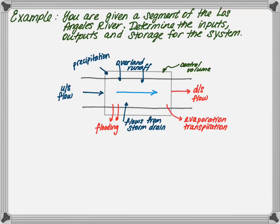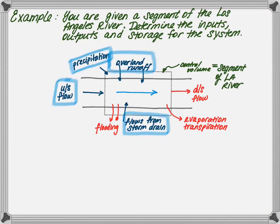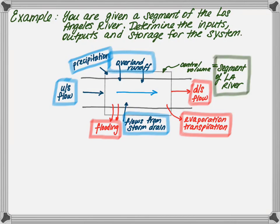Outputs include downstream flow leaving the system, flooding when the water levels are too high to be contained in the river, evaporation from the surface, and transpiration from the vegetation. And that leaves our control volume, which is the segment of the LA River. Highlighted in blue, we've got the inputs; highlighted in red, we have outputs; and highlighted in green is our storage.